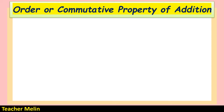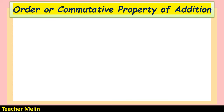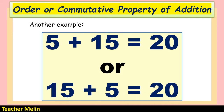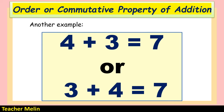Here are some examples of the order or commutative property of addition: 8 plus 2 equals 10, or 2 plus 8 equals 10; 5 plus 15 equals 20, or 15 plus 5 equals 20; and 4 plus 3 equals 7, or 3 plus 4 equals 7.